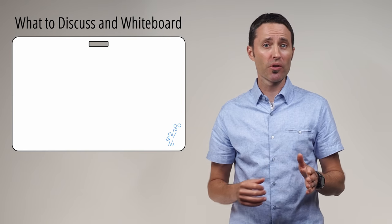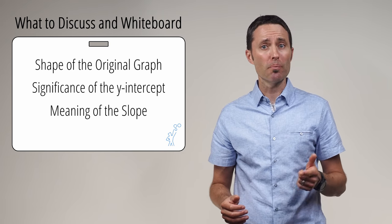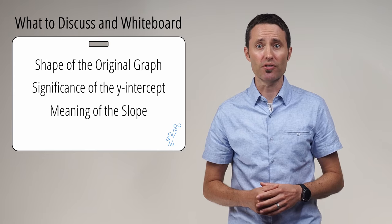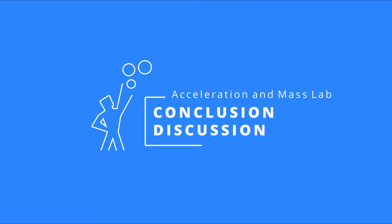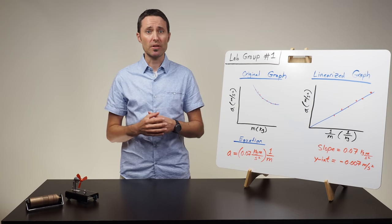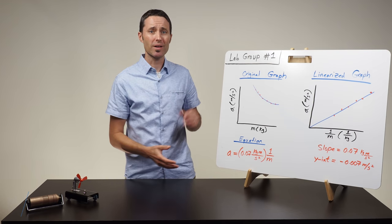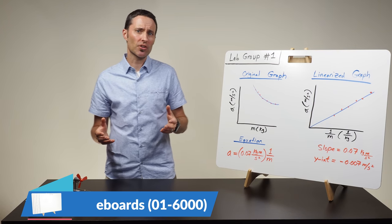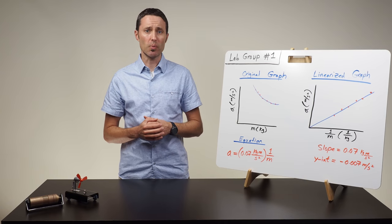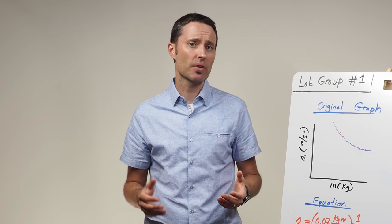Teaching students how to linearize or re-express their non-linear graphs might seem like a lot of extra work, but the payoff will come during the conclusion discussion. Before students circle up to share the analysis of their results, ask each lab group to discuss the shape of the original graph and the significance or meaning of both the slope and the y-intercept of their linearized graph equation. To facilitate a whole class conversation, have each lab group record their original graph, linearized graph, and resulting equation on a large whiteboard. Have the class circle up so that everyone can clearly see the graphs and equations on each whiteboard. Your goal is to help facilitate a conversation that allows your students to make connections and draw conclusions from the graphs and equations.